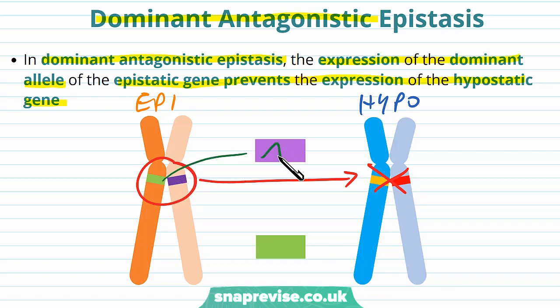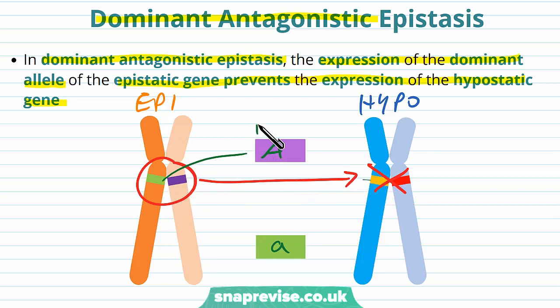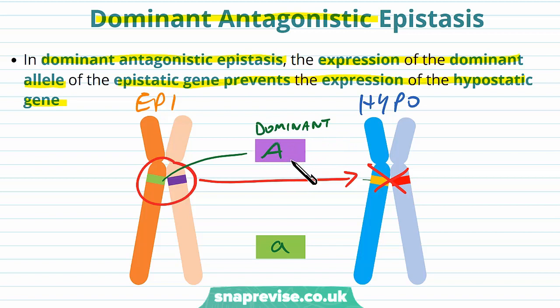For the antagonism in dominant epistasis, there has to be a dominant allele present as either one or two copies, because a dominant allele will work whether there's one or two. This is different from recessive antagonism, which needed two recessive copies. An example of dominant antagonistic epistasis is in the inheritance of feather colours in chickens.